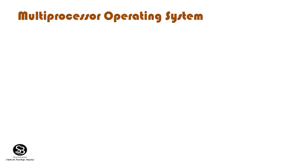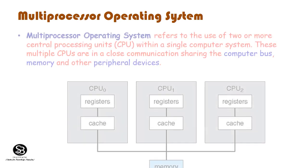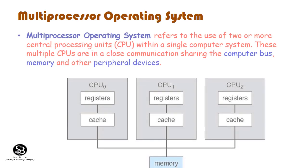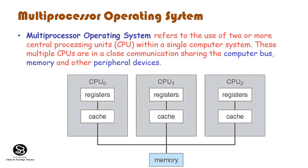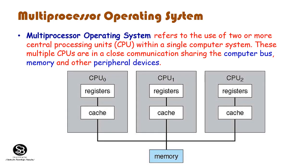Multi-Processor Operating System: A multi-processor OS refers to the use of two or more central processing units within a single computer system. These multiple CPUs are in close communication, sharing the computer bus, memory, and other peripheral devices.